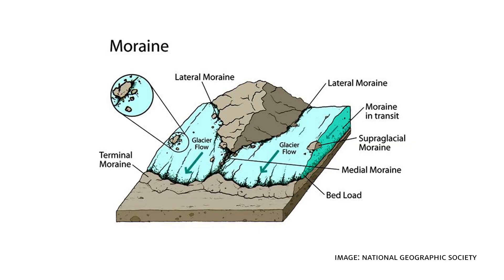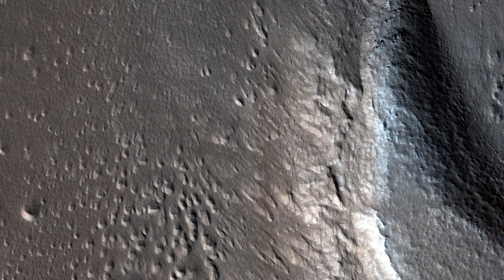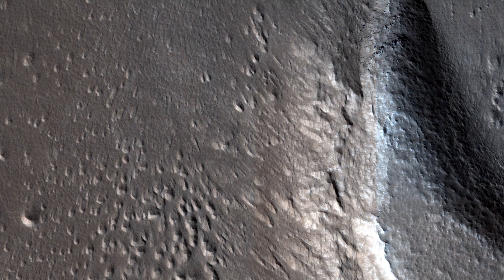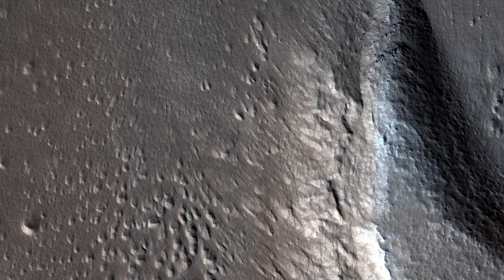A moraine is a mass of rocks and sediment carried down and deposited by a glacier. If the structure is a moraine, we should expect to find two sources of debris converging in the valley.